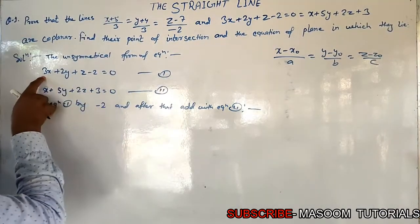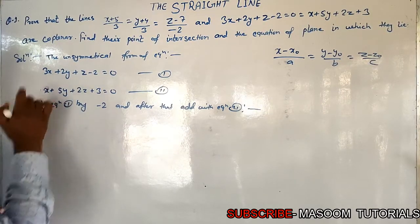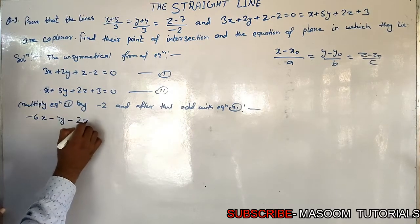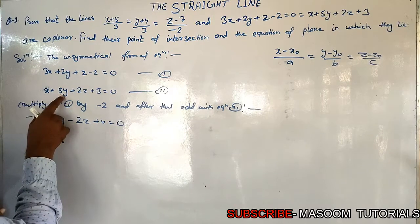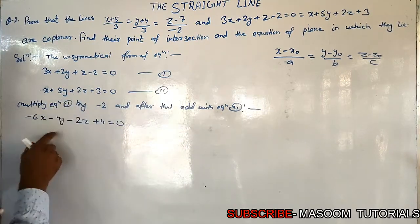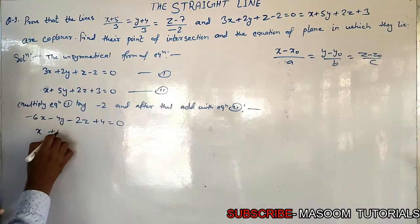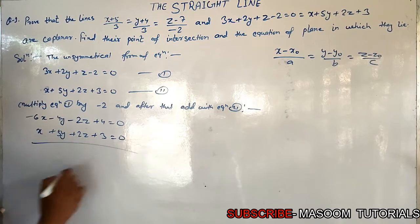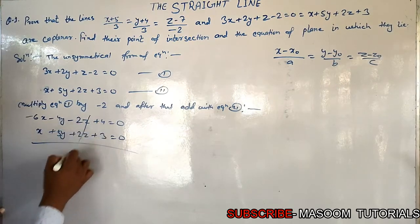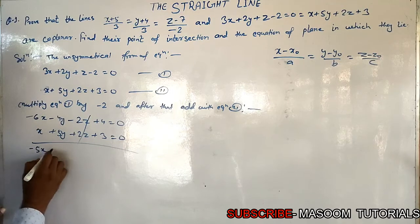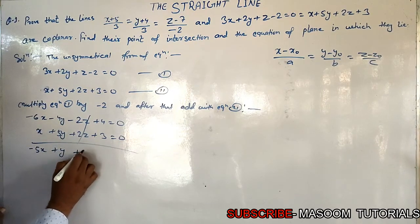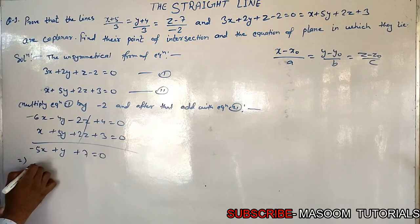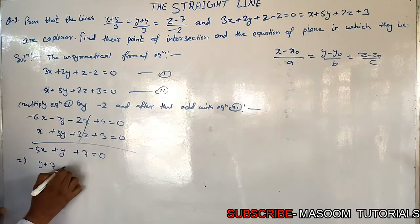Multiplying equation 1 by 5 and equation 2 by minus 2, we get: 5 times gives us minus 2x minus 10y minus 2 minus 4z minus 6 equal to 0. Adding the two equations, y cancels out, giving us y plus 7 is equal to 0, so y plus 7 equals 5x.